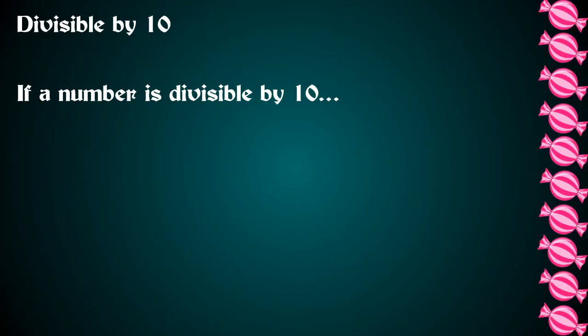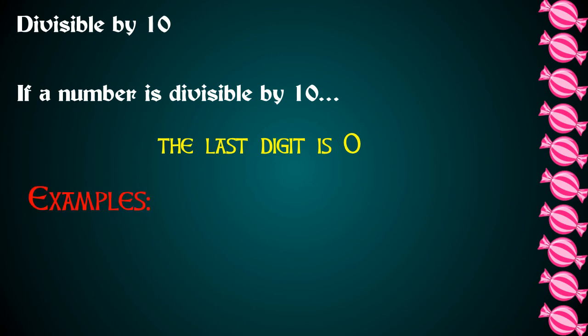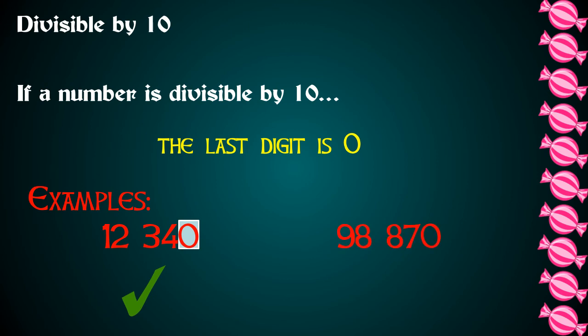Let's take a look at numbers that are divisible by 10. If a number is divisible by 10, the last digit is 0. Let's look at 12,340 — that ends in a 0, so that's divisible by 10. What about 98,870? That also ends in a 0, so that is divisible by 10.